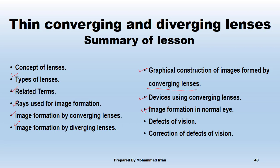Next is image formation in the normal eye. The image formed by a normal eye is always inverted as well as real. Then, defects of vision are covered, which mainly include two things: number one, myopia, and number two, hypermetropia. Their correction is also included in the syllabus.